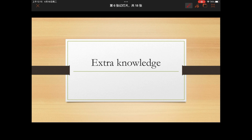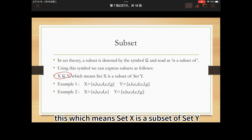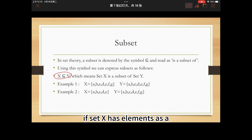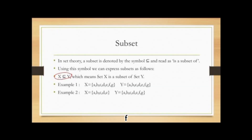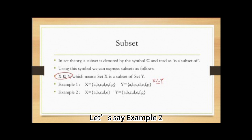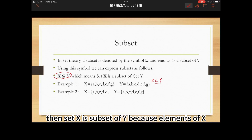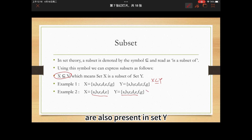Let's take a look at some extra knowledge. What is a subset? In set theory, a subset is denoted by the symbol ⊆ and read as 'is a subset of.' If set X has elements S, A, B, C, D, E, F, G and set Y has elements S, A, B, C, D, E, F, G, then set X is a subset of Y because all elements of X are also present in set Y.